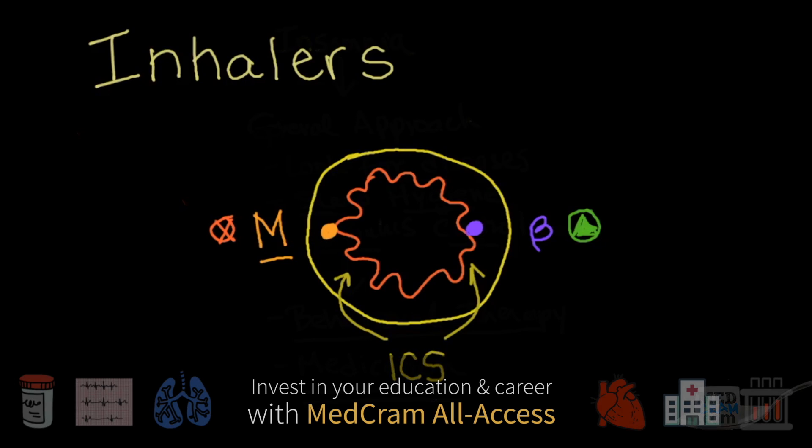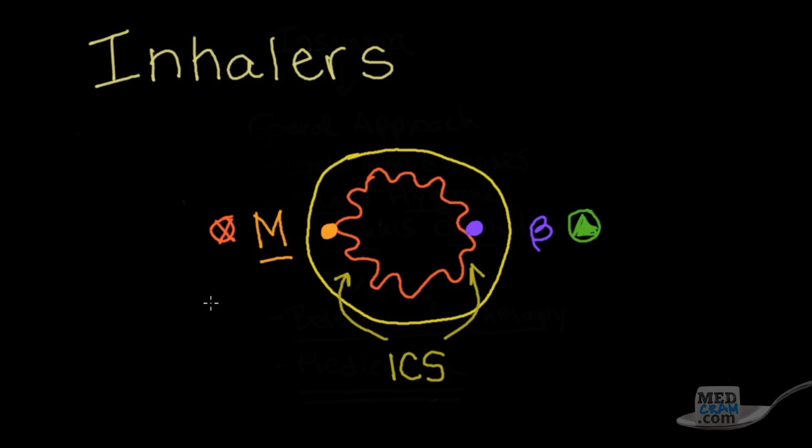So why is that important? Well, you'll be able to identify these different types of drugs based on what they end with. Muscarinic always end in I-U-M. So what are examples? Tiotropium, ipratropium, umeclidinium. These are all muscarinic antagonists. They all end in I-U-M. Now there is another one that you should know that has been added to that category called glycopyrrolate. So you can also put L-A-T-E, glycopyrrolate. If you see an I-U-M or a late, it's a muscarinic antagonist.